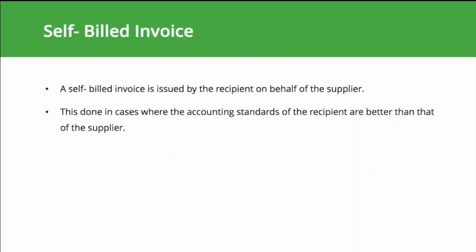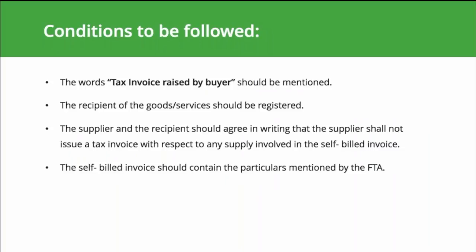A self-built invoice is issued by the recipient on behalf of the supplier, and this happens most frequently when the recipient's accounting practices are more efficient than the supplier's. A self-built invoice can be issued provided: the words 'tax invoice raised by the buyer' are clearly displayed; the recipient is VAT registered; the supplier and recipient agree in writing that the supplier shall not issue a tax invoice for any supply covered by the self-built invoice; and the invoice contains all details required by the FTA — the same details as a normal tax invoice.